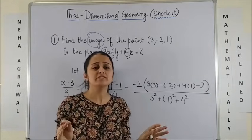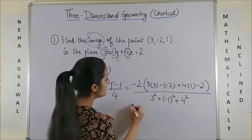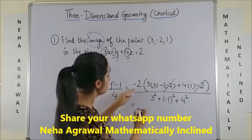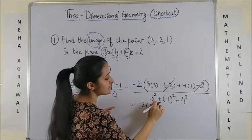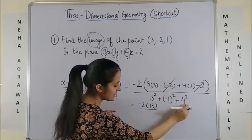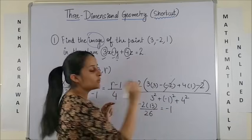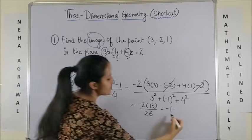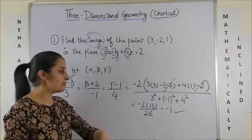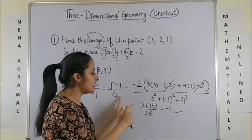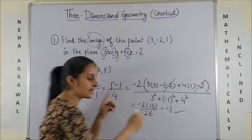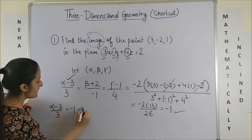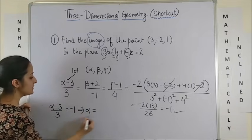The right-hand side will always simplify to a very simple number. Minus 2 and plus 2 get cancelled; 9 plus 4 is 13. So minus 2 into 13, and the denominator is 9 plus 1 = 10, plus 16 = 26. These cancel and give you only minus 1. Now to get your alpha, you simply equate the first and the last: alpha minus 3 over 3 equals minus 1, giving alpha equals 0.